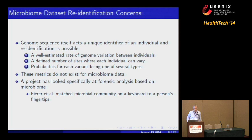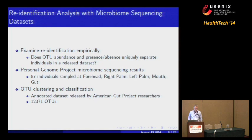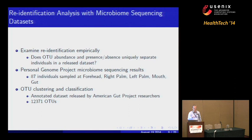There have been projects looking specifically at forensic analysis based on microbiome data. For instance, Ferrer matched the microbial community on a keyboard to a person's fingertip. What I aim to do is examine re-identification empirically — looking at an already-posted dataset and asking whether OTU abundance, or a presence-absence matrix derived from it, uniquely separates individuals in the dataset. This would form the underpinning of whether a microbial fingerprint can uniquely identify people, indicating we shouldn't be posting these datasets publicly.